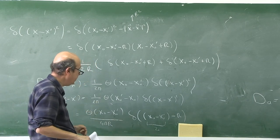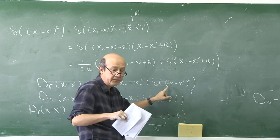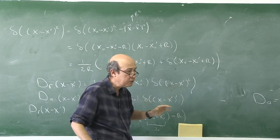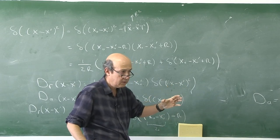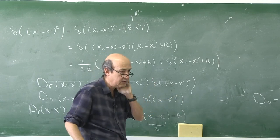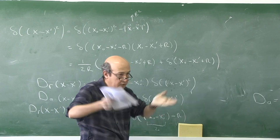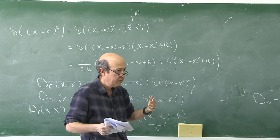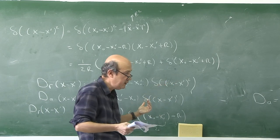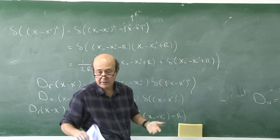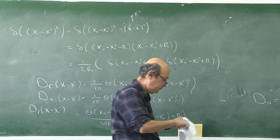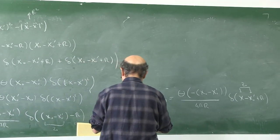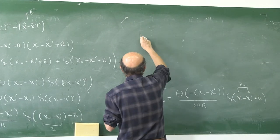The Green's function acts on a test function as a delta function condition: x minus x' squared equal to zero, meaning the light cone. All connections between the source and the observation point lie on the light cone — one branch is retarded (earlier source), the other is advanced (later source). The solution for the four-potential A^β(x) is the convolution of the Green's function with the source: A^β(x) = (4π/c) ∫ d⁴x' D(x − x') j^β(x').